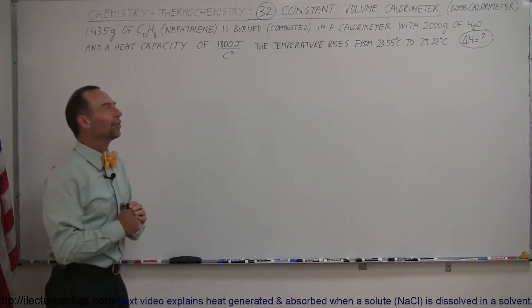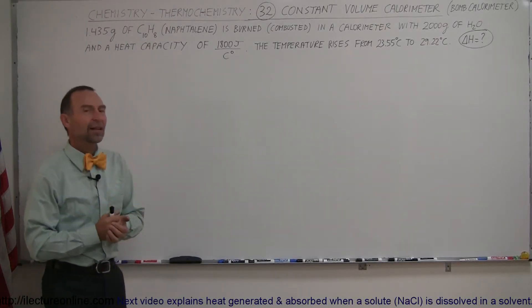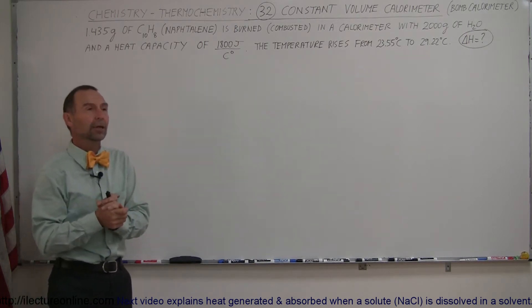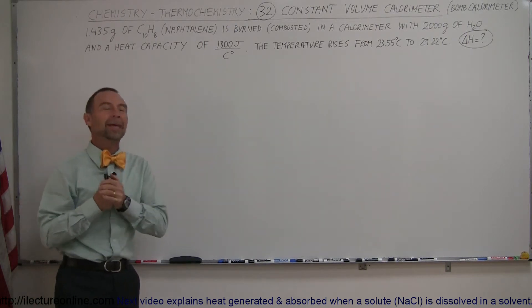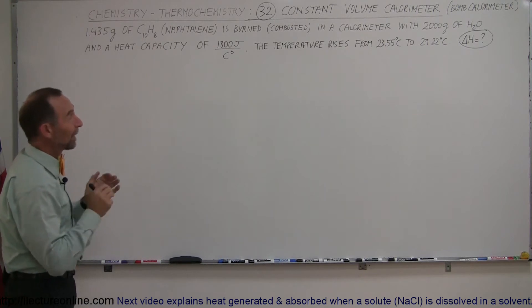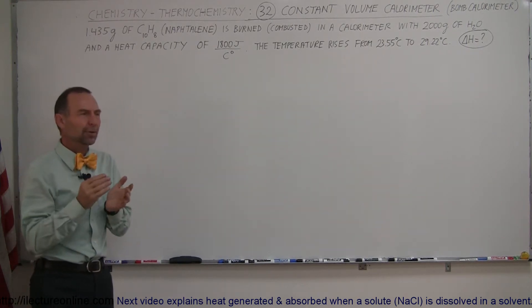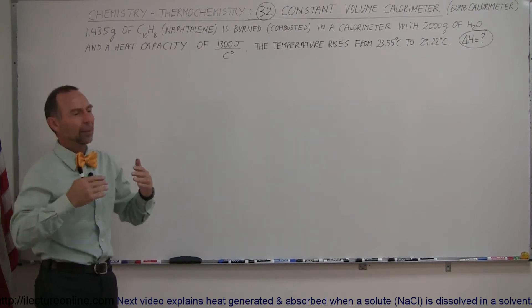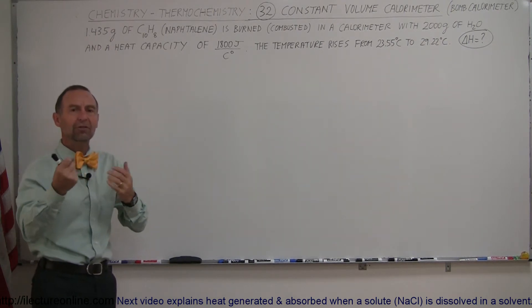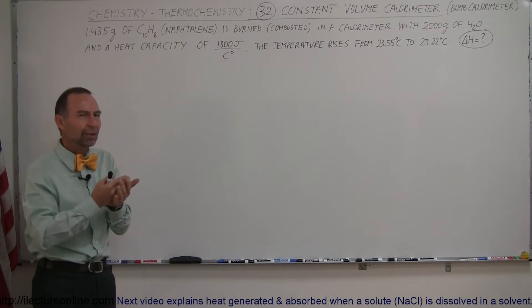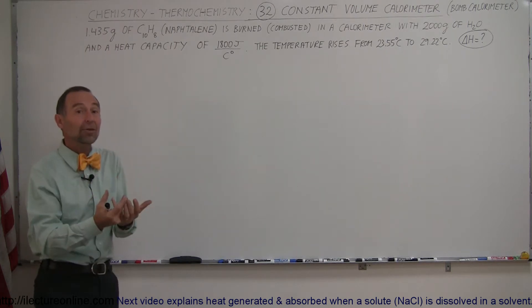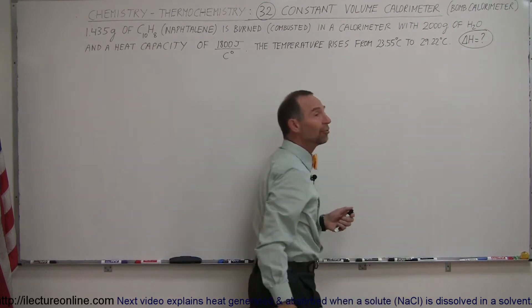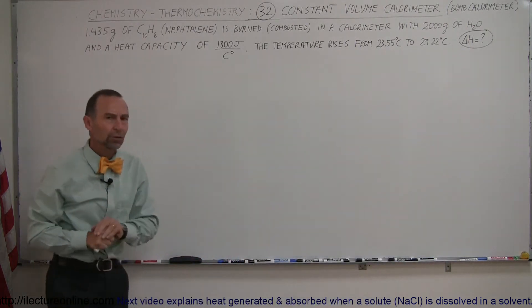Now that we're starting to get some confidence working with calorimeters, let's do another example of what we call a constant volume calorimeter or a bomb calorimeter. A constant volume calorimeter is used when a reaction creates gas which would otherwise expand. When the gas expands, it takes away energy from the reaction and we can't fully measure the energy released to find the change in enthalpy of the reaction, which is what we're trying to do here.